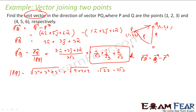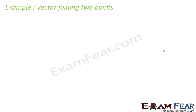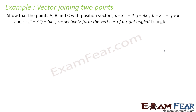I had these P and Q points. I can very easily find the PQ vector and then very easily find the unit vector in the direction of PQ. Now, here we have to prove that the points A, B, C with position vectors given form a right triangle.